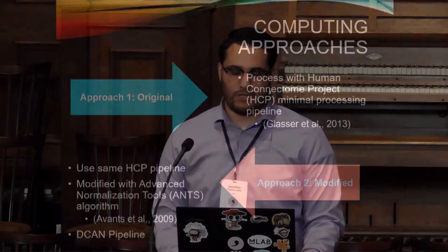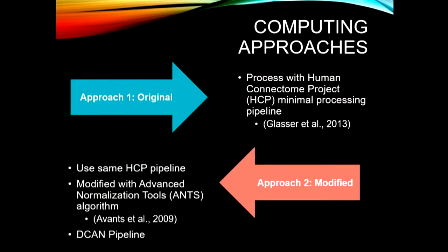Approach two is going to use our modified pipeline. We grab the same HCP pipeline but tweak it a little bit — it's like grabbing a recipe for a dish but adjusting it to see if we can make it taste better. We're going to add an algorithm known as Advanced Normalization Tools, also known as ANTS. We're going to use that algorithm to see if there are any changes within MRI quality imaging and any notable differences. This is going to be our Deakin pipeline.